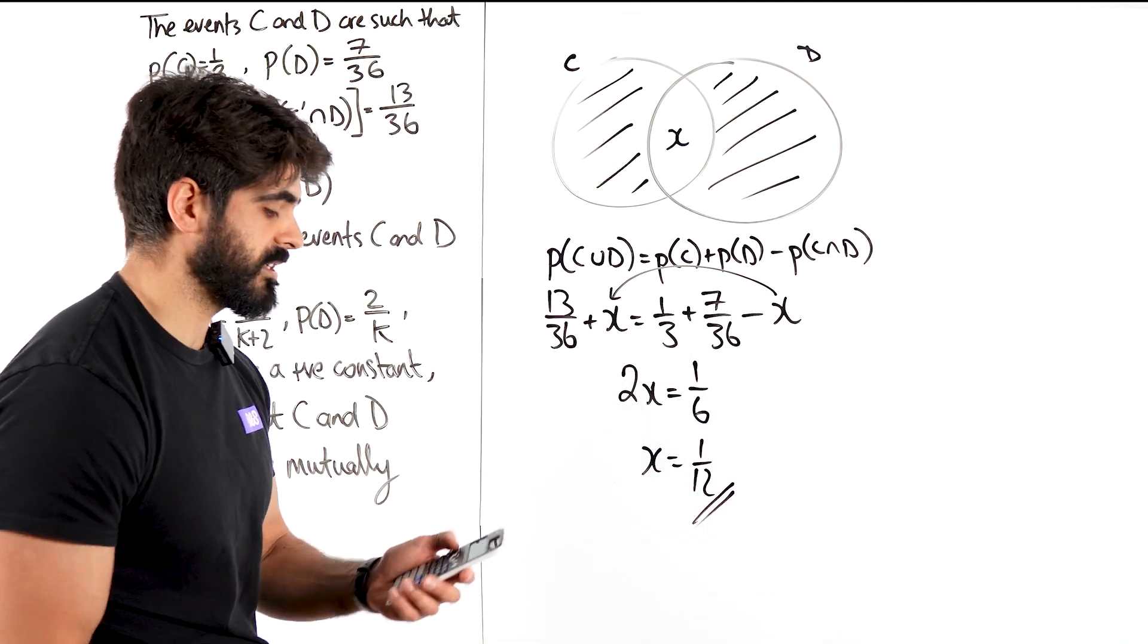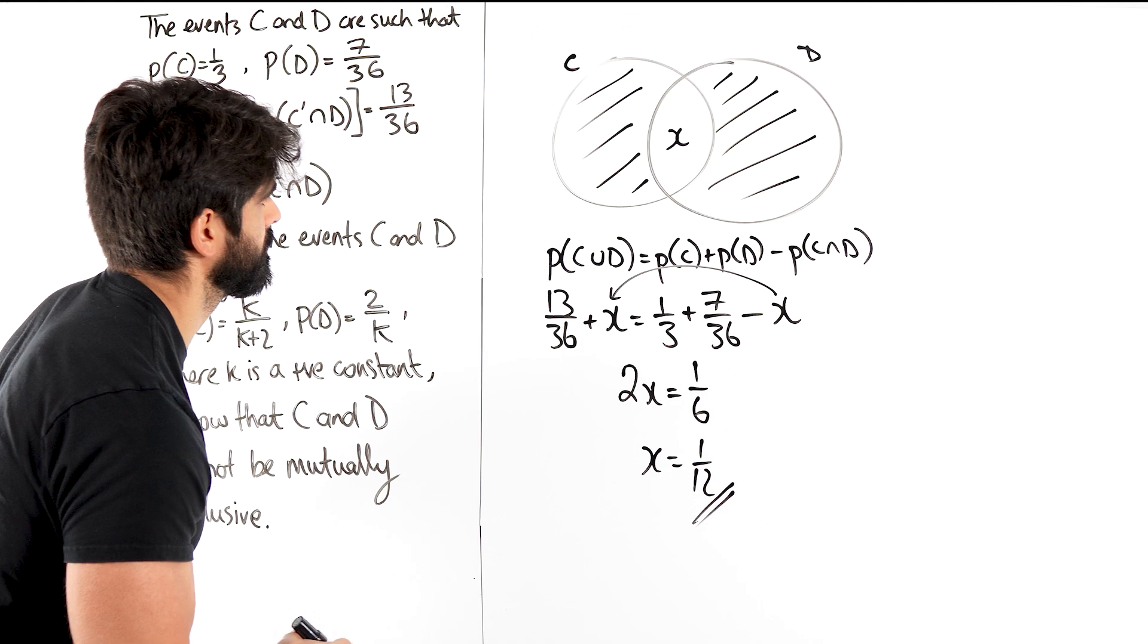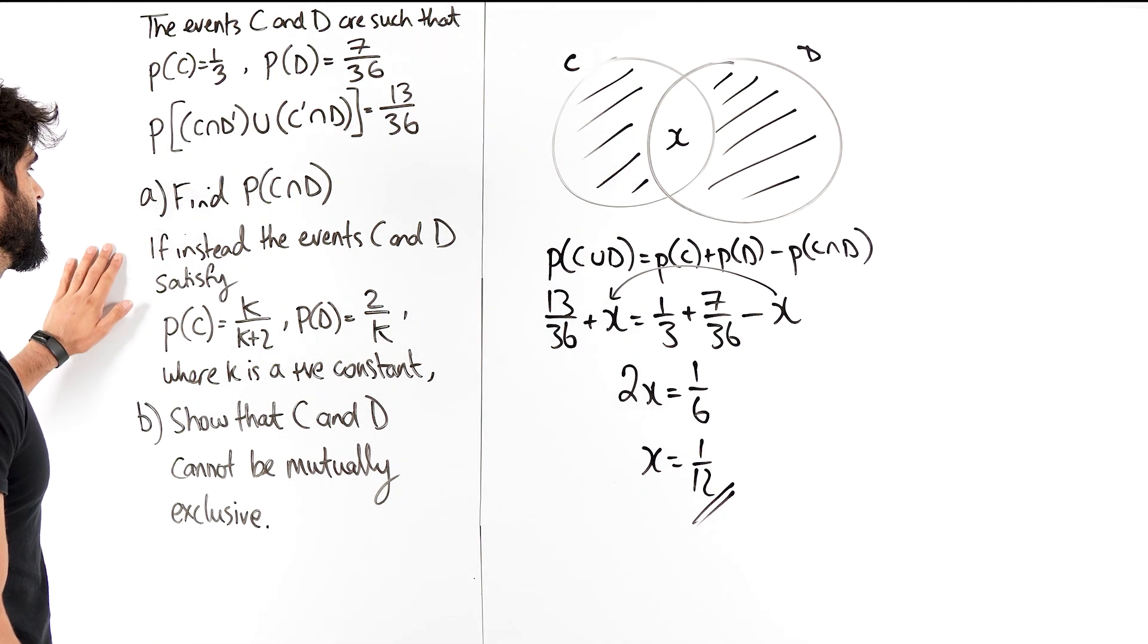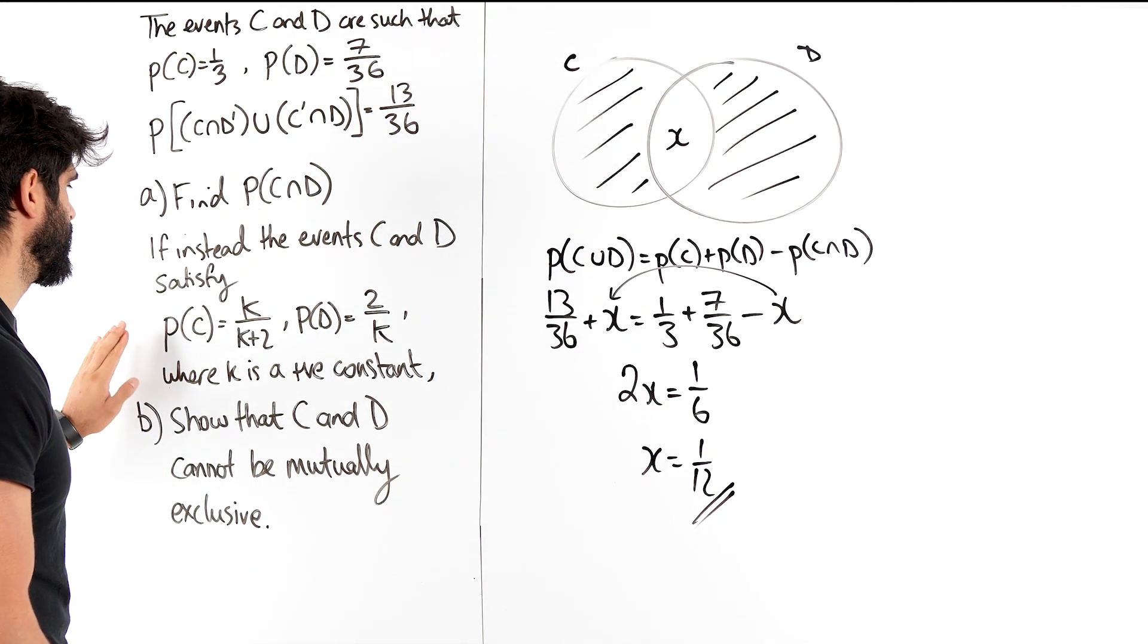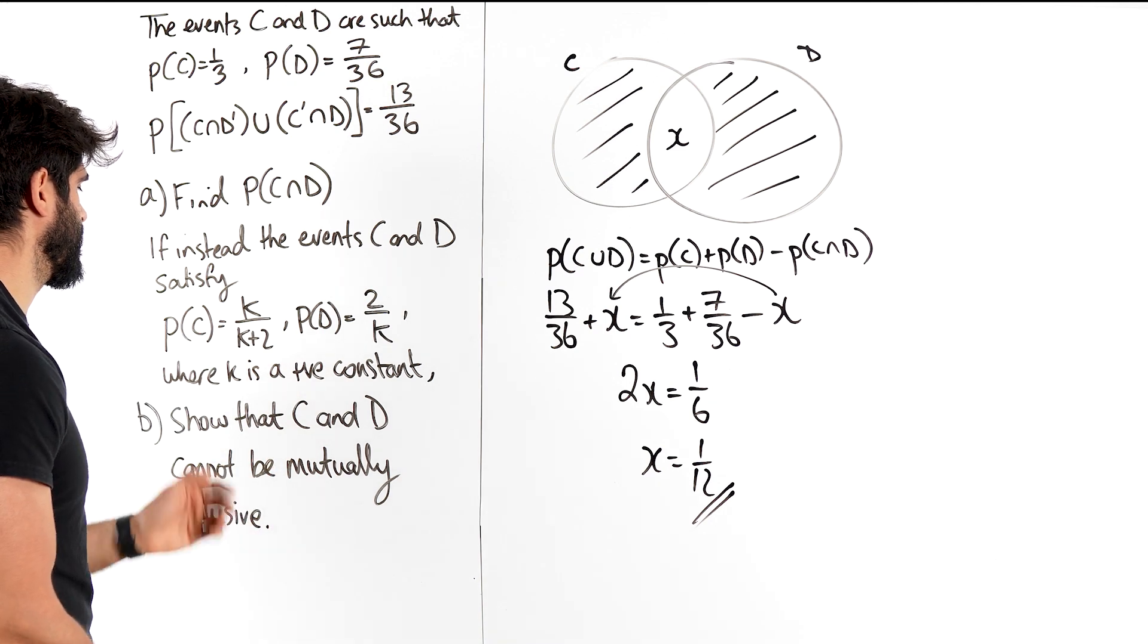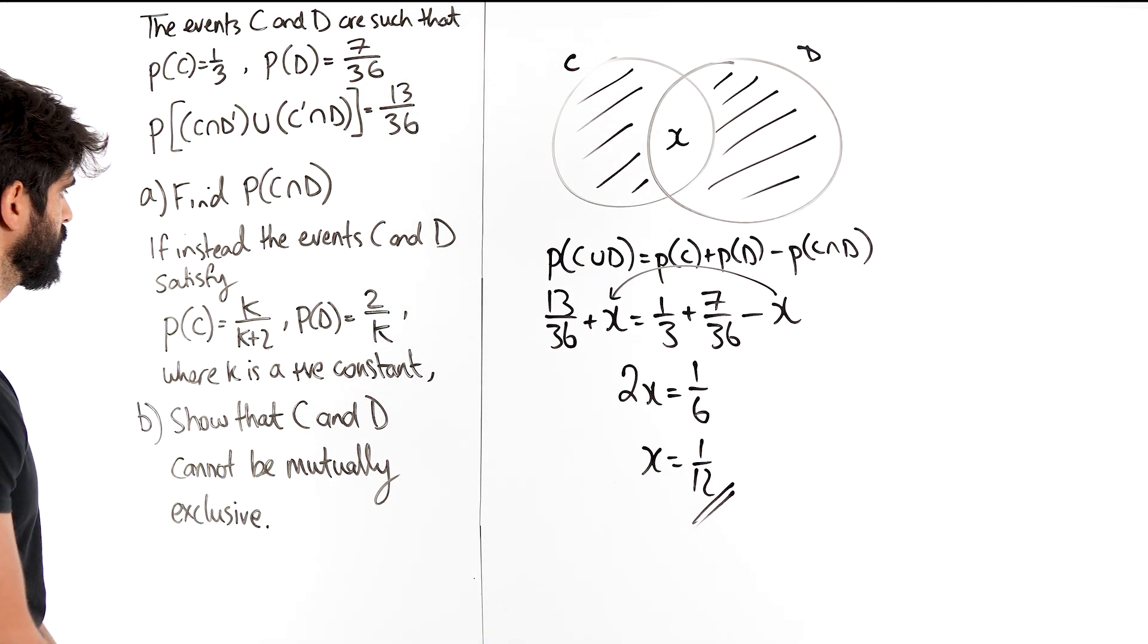So with this trick, guys, it's going to save you a lot of time. Now it says, if instead the events C and D satisfy this and this in terms of K, where K is a positive constant, show that C and D cannot be mutually exclusive.